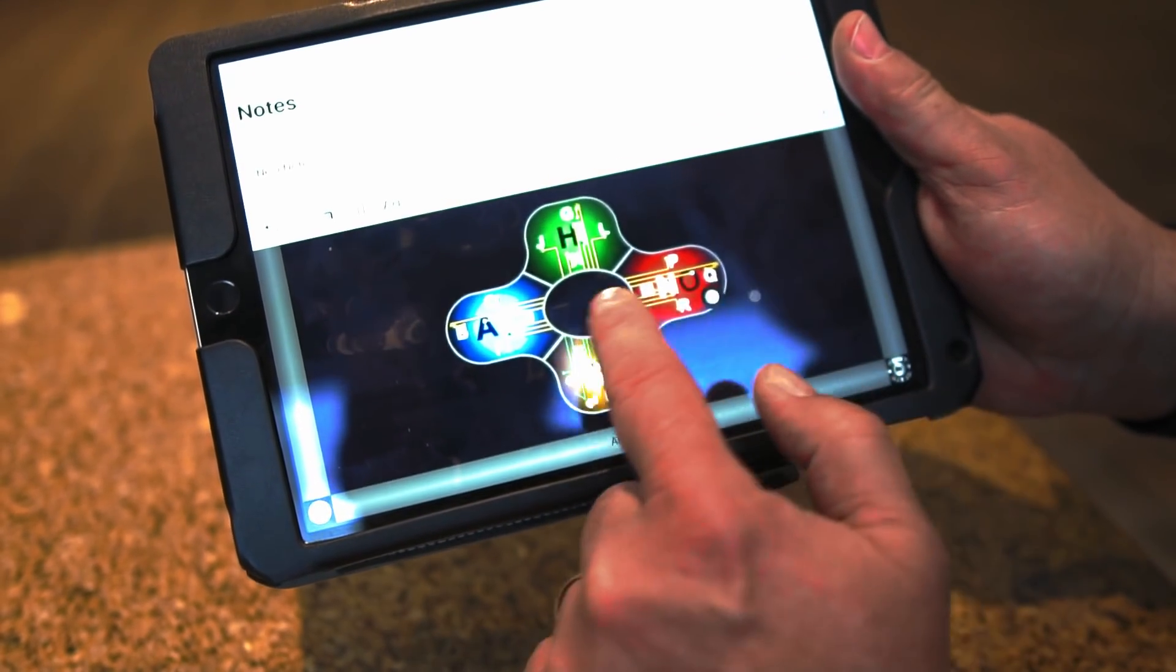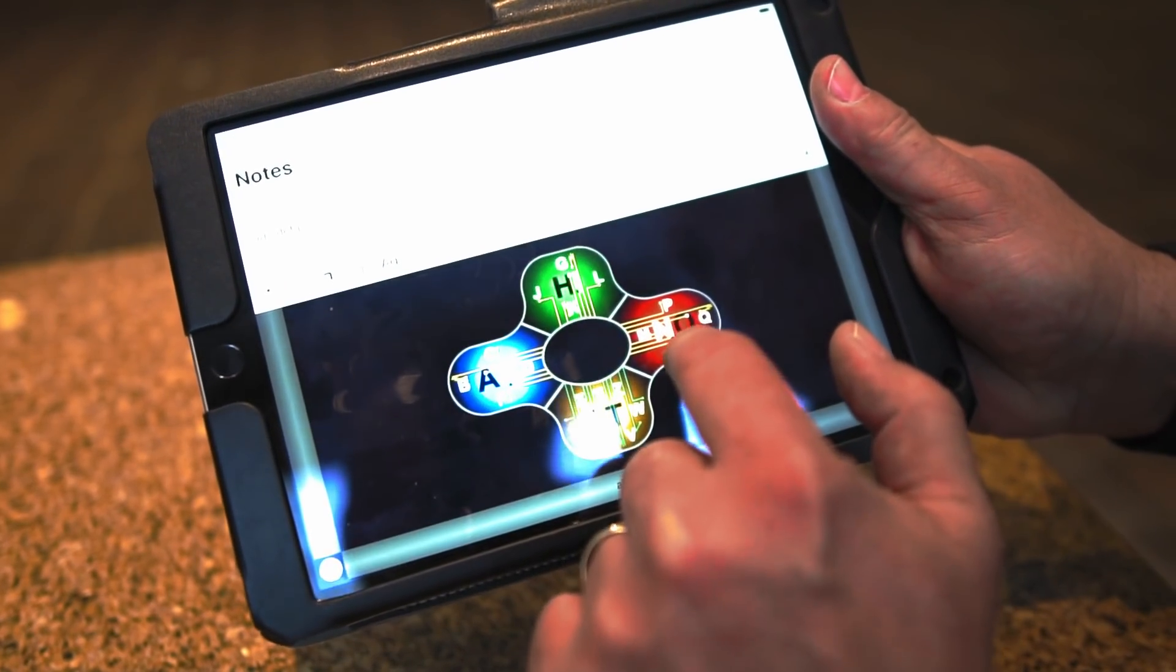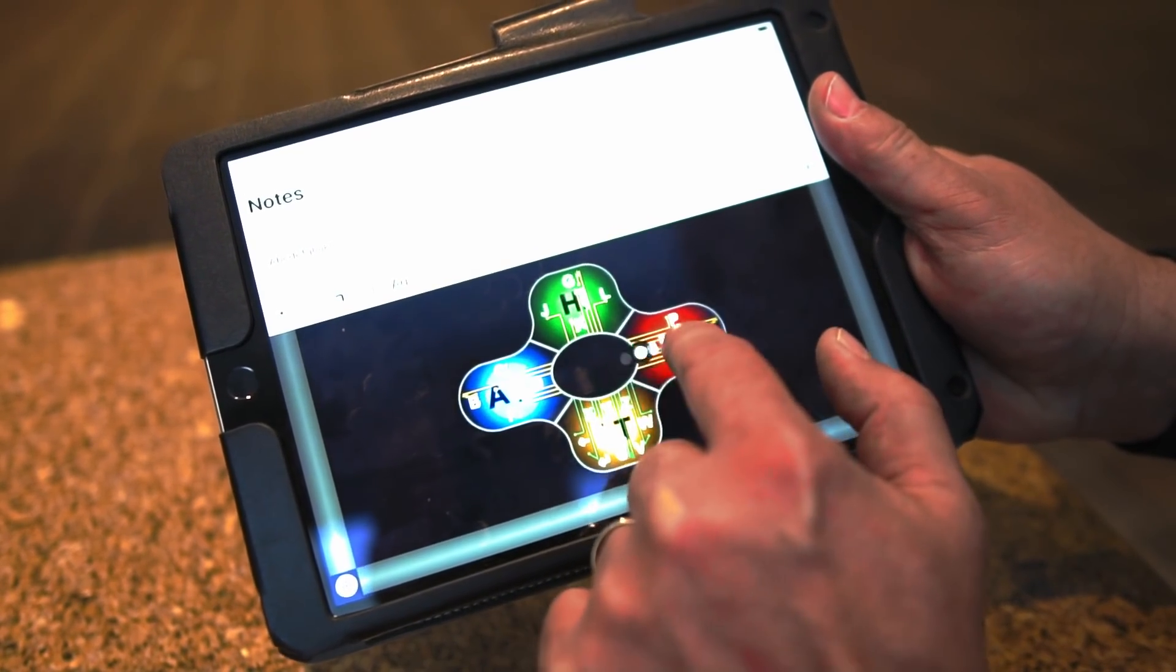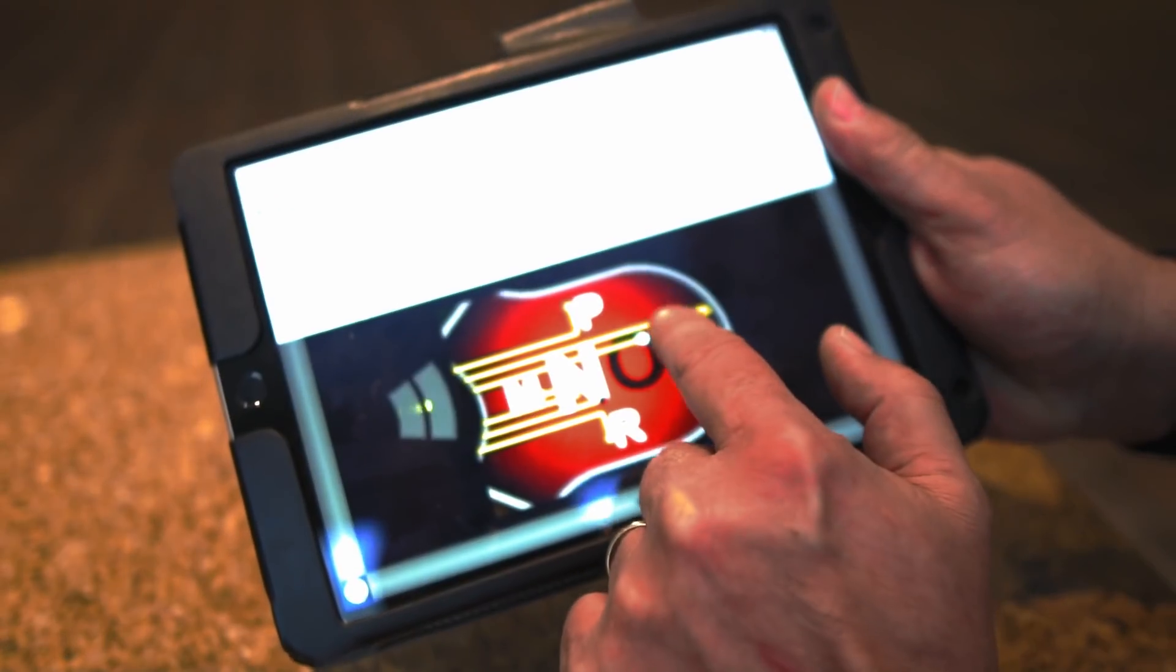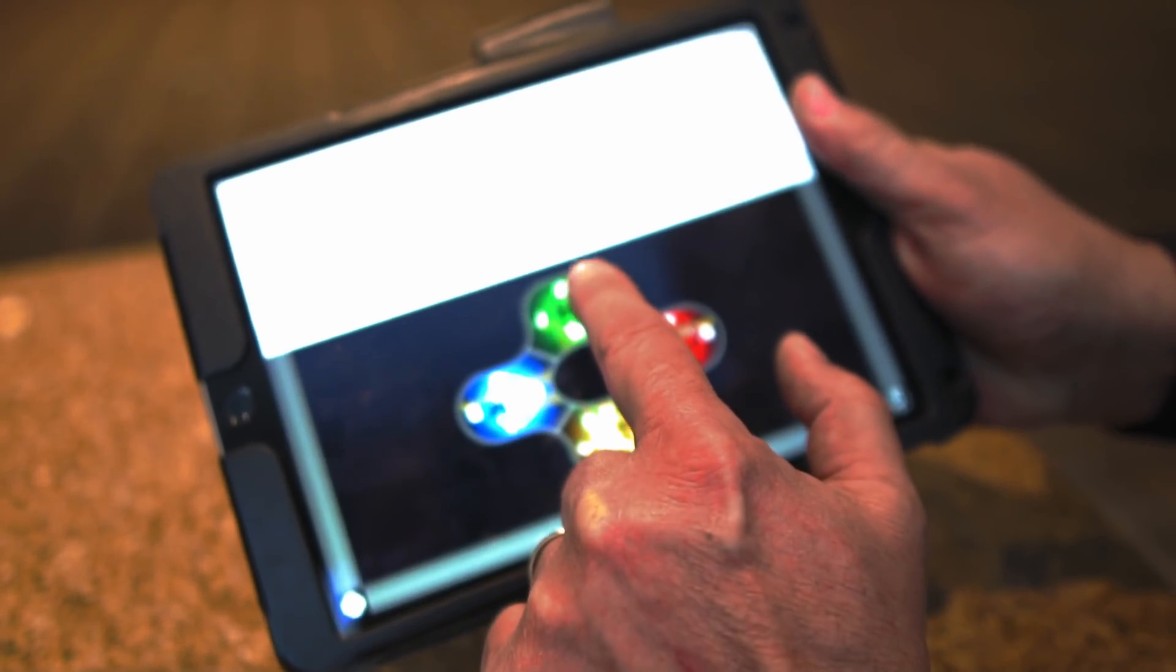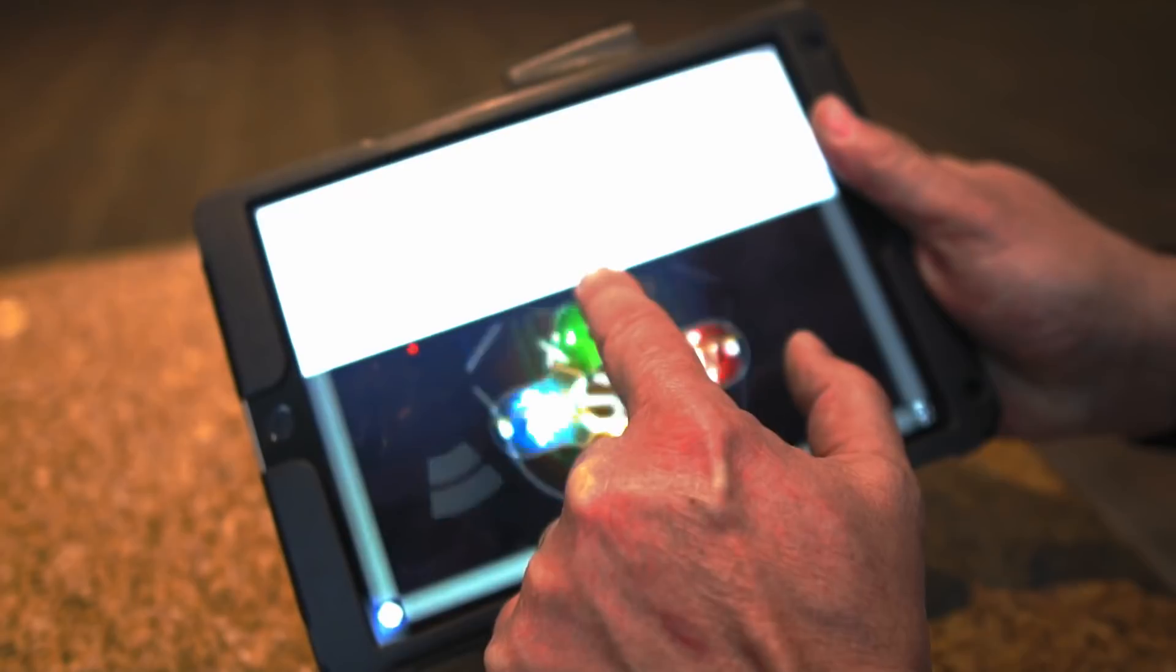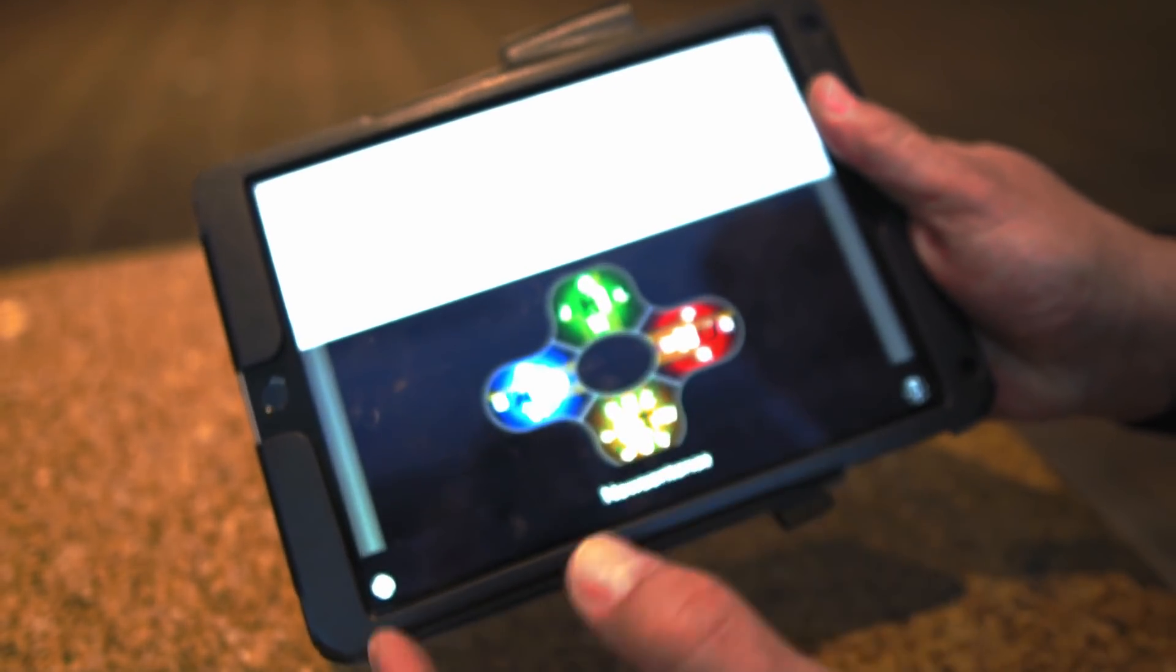So I'll type the alphabet really quick. A, E, C, D, E, F, G, H, I, J, K, L, M, N, O, P, Q, R, S, T, U, V, W, X, Y, Z, space, new sentence. So if you tap twice, you can end the sentence and start a new one.